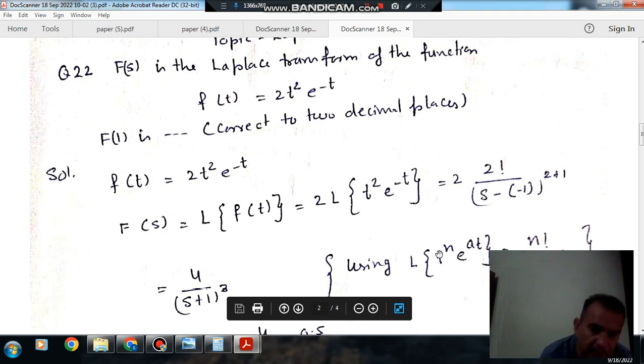So n here, n is the t raised power, which is 2, and a here is minus 1 because here it is minus 1t. So it will be 2 times the Laplace of t² times e^(-t).